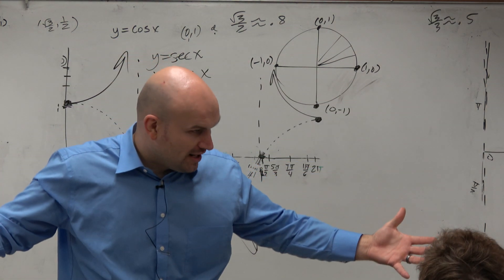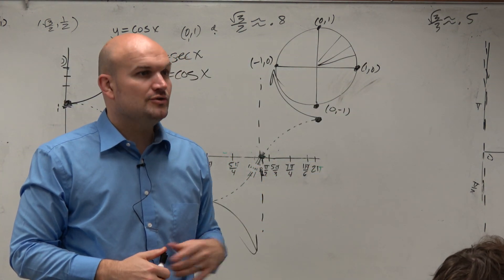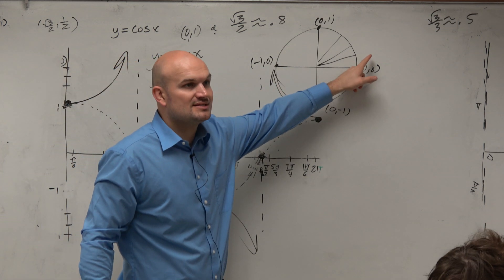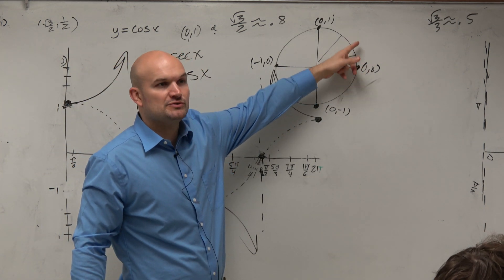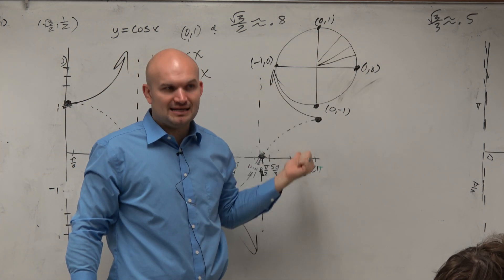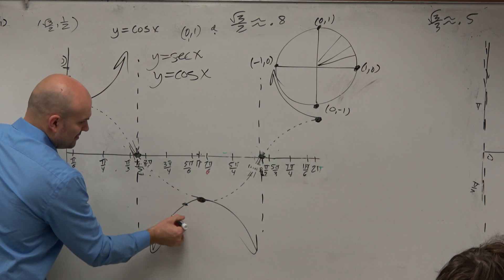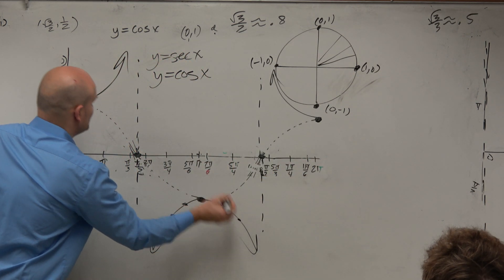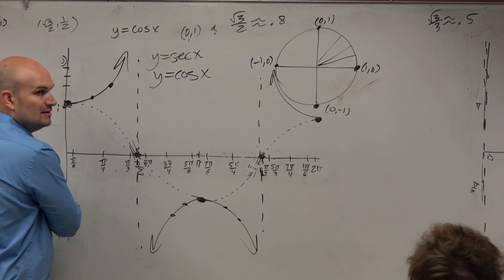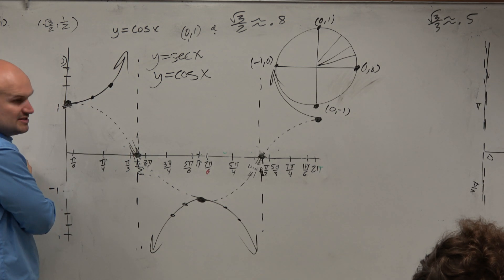And again, if you really wanted to confirm this, you could also just figure out the points and do 1 over x for each one of these, find the decimal values, and then plot them. And guess what? You would get points that make up these parameters.